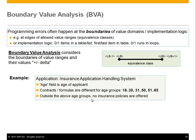Boundary value analysis considers the boundaries of value ranges on input variables and their values. If you look at the graphic on the right, you can see that if you have an equivalence class, the upper bound and lower bound define the range of allowed values. Since the boundaries are very error-prone, you must test those.